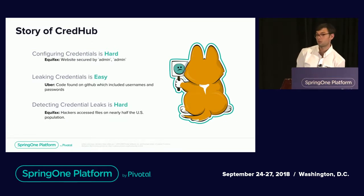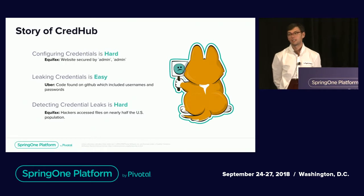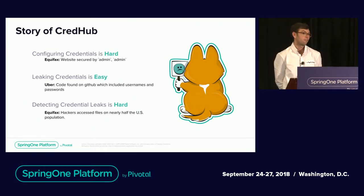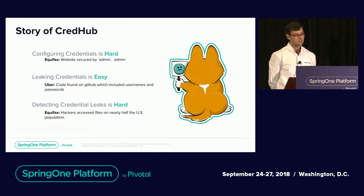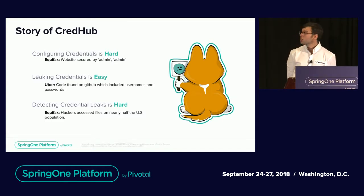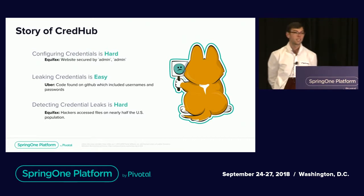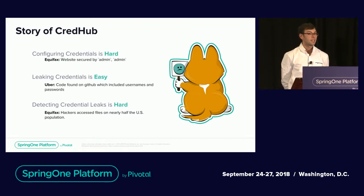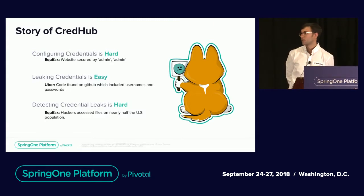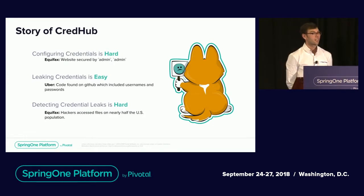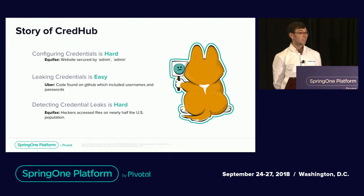A perfect example is Equifax — they left open a website with admin/admin. It's not necessarily their fault; there was a piece of vendor code they had gotten and started running, and they didn't know they had to change the password. In addition, leaking credentials is easy. What happens when Joe from five cubes down decides to leave the company? He had our admin credentials to our jump boxes. Next thing you know, he's got credentials to production and he's working at our competitors.